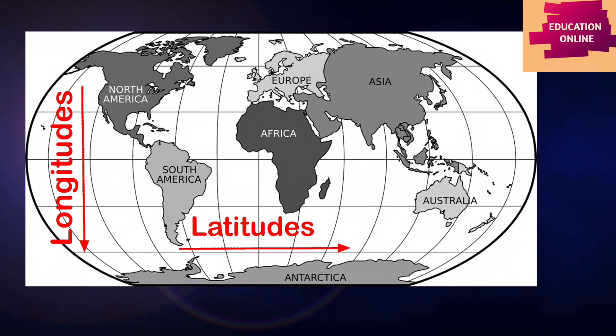These two sets of lines intersect each other to form a network of lines over the globe or a map, which is known as a grid. This grid helps us to locate places on the earth. So if we know the latitude and longitude of a particular place, then the exact point where these two lines intersect each other is the location of the place on the earth.